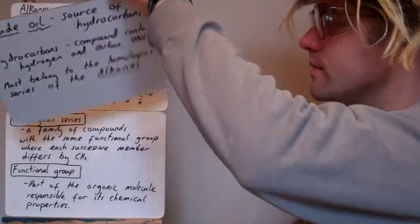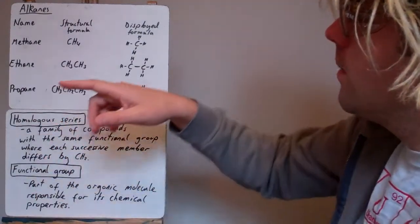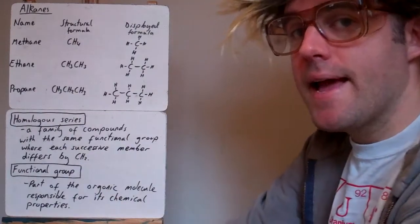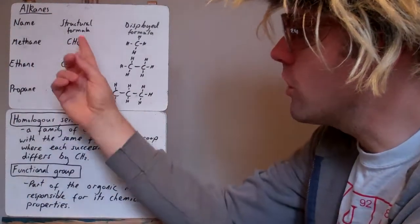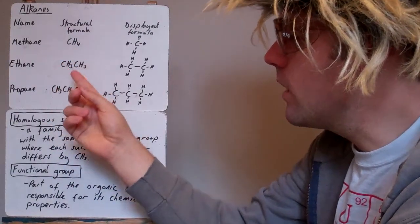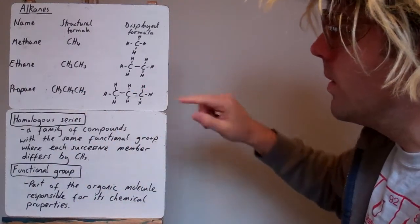The alkanes start off by looking at the name: methane, ethane, propane. So they all end in ANE because they're all alkanes. Here we've got the structural formula. The structural formula shows you the number of carbons and hydrogens, but also gives you an idea about how they're arranged. And here we've got the displayed formula.